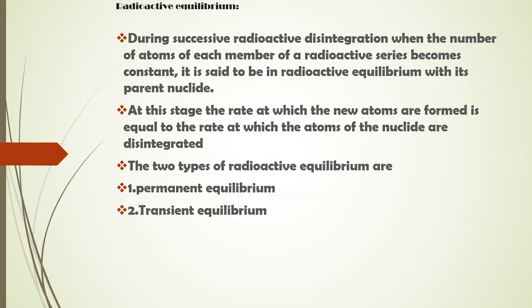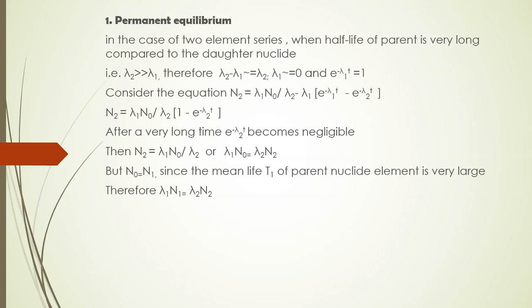Radioactive equilibrium is also classified into two groups: permanent equilibrium and transient equilibrium.